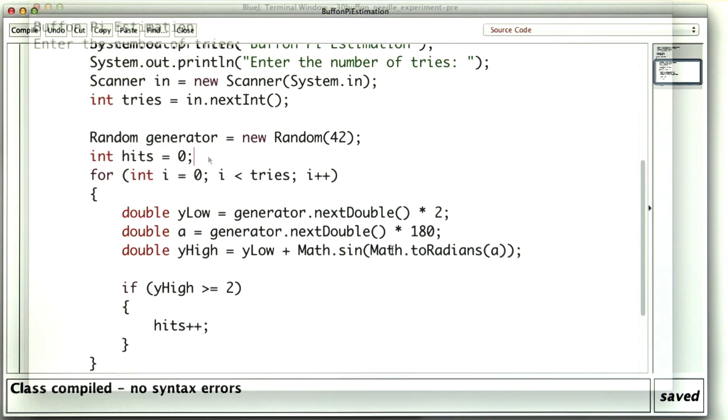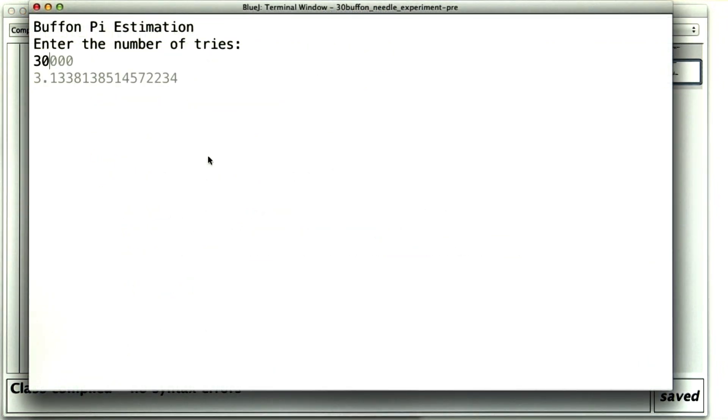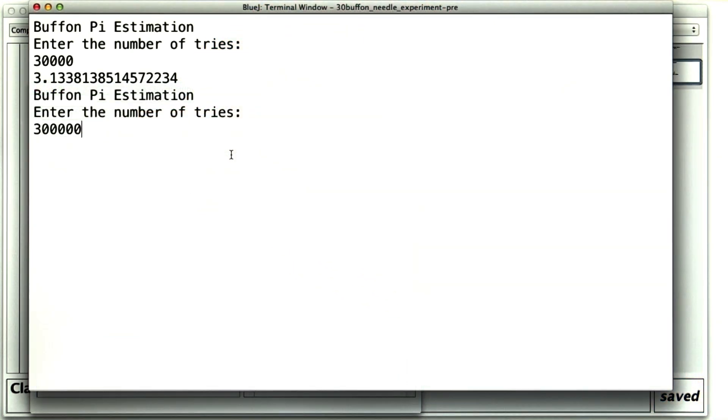All right, let's try this. I'm going to try it 30,000 times. 3.13. I guess it's okay. It's not great. Let's try it again. 300,000? It's a little closer to 3.14.